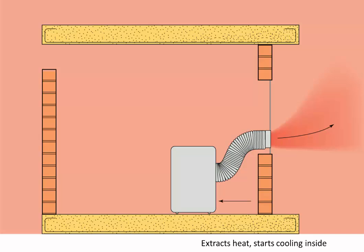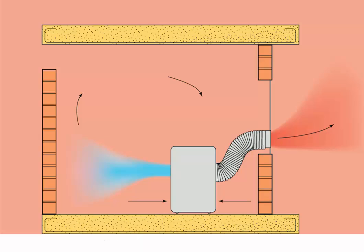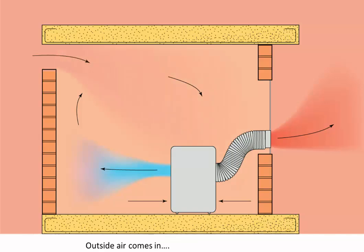We switch on the power, and the unit starts to cool down inside, pumping hot air to the outside through the exhaust hose. When it is ready, the unit sends out cool air into the room. As with the split system, the cool air stream moves fast enough to mix up all the air in the room. Gradually the room cools just a little. However, as the air conditioning is exhausting room air through the hose to the window, this air has to be replaced. From somewhere, air flows in through the opening, bringing hot outside air with it, cancelling out nearly all of the cooling effect.